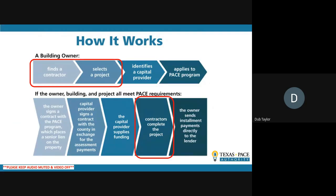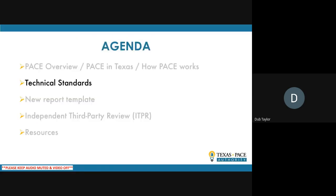How it works: the building owner decides to explore PACE, brings in a contractor, finds a project, identifies a capital provider, and applies to the program. Then there are steps dealing with legal and financial aspects. The areas circled in red on the slide are the phases that directly involve contractors and engineers — those are the phases most attendees today would be most involved in. Moving on to the next part of the agenda: technical standards, which is the focus of today's webinar.